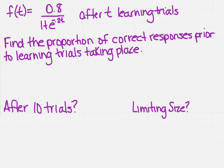What I need to find is the proportion of correct responses prior to the learning trials taking place. Now remember, proportion is divided. If I haven't had any trials take place yet, what is t? Well, t is 0 if nothing has happened.